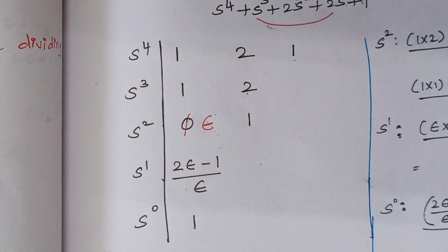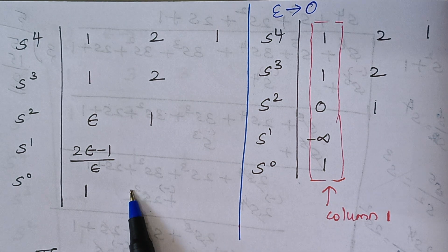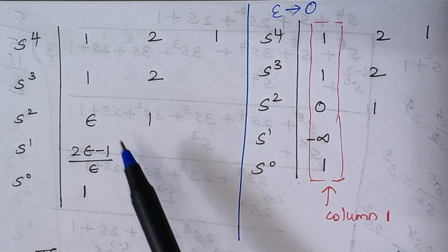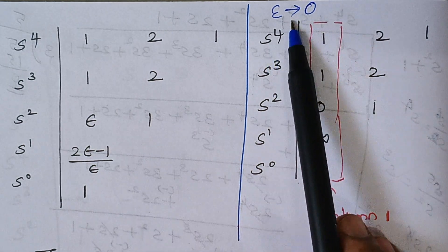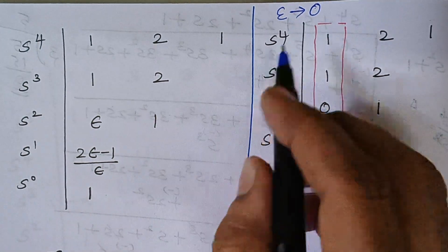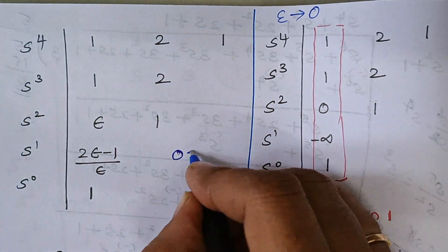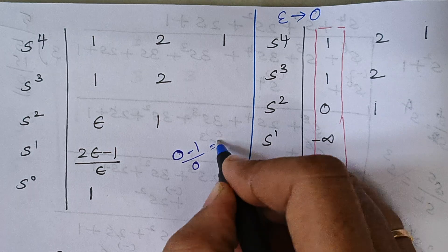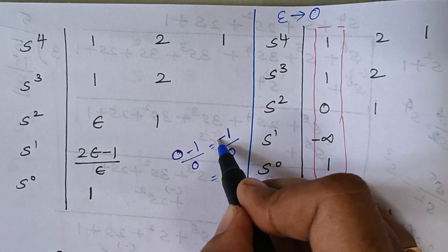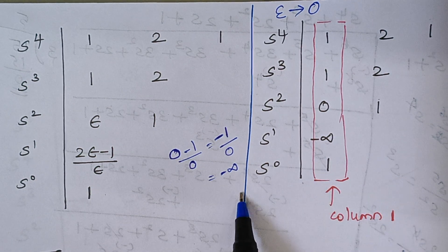The next step is to substitute the value of epsilon as 0. When epsilon becomes 0: the term 2ε minus 1 over ε becomes 0 minus 1 divided by 0. Since 2 × 0 = 0, we get 0 minus 1 = minus 1, divided by 0. Anything divided by 0 is infinity, and since we have a minus sign, it becomes minus infinity. The final term remains 1.